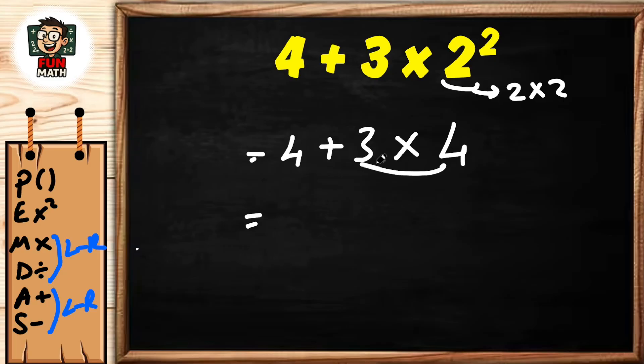Now multiply: 3 times 4 equals 12. Finally, addition: 4 plus 12 equals 16. We solved the solution in detail. I hope you understand.